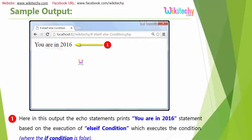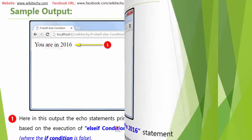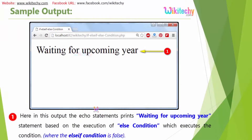If I change the year to 2016, the else if condition is executed and I get that output. Then I change the system date to 2017, and now the output is 'Waiting for upcoming years,' because the else condition is triggered since no other condition matched.